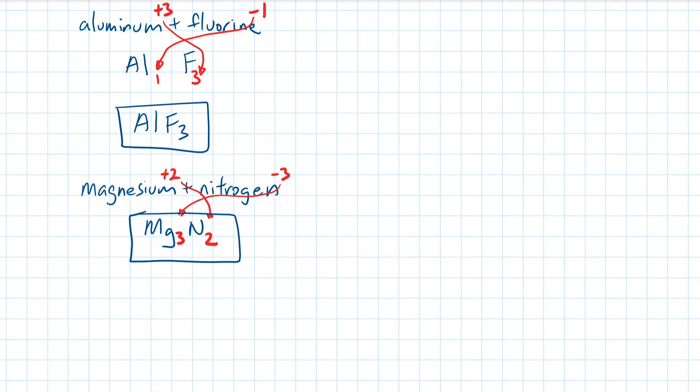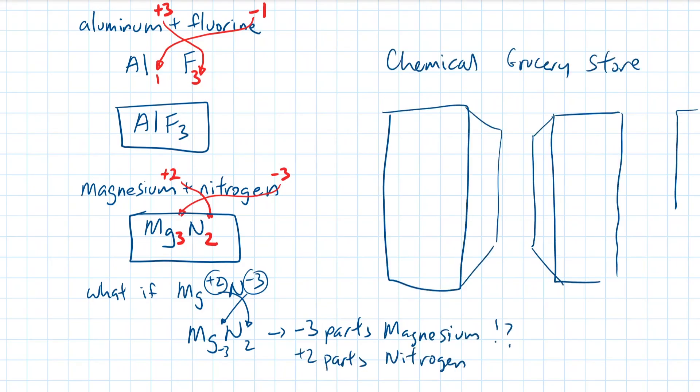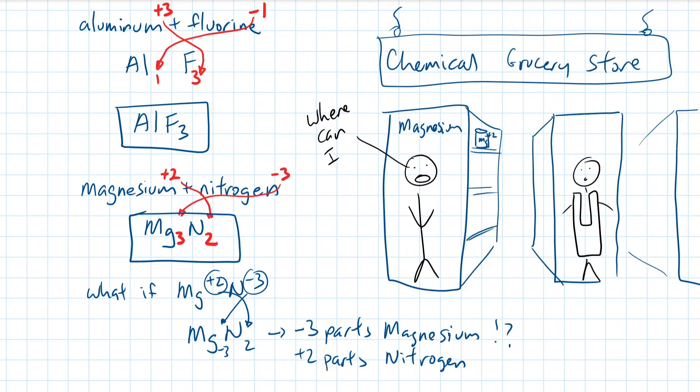Remember, don't write down any minus signs and all the numbers should be written in subscript to indicate quantity. If we want to bake a magnesium nitride cake, we need 3 parts magnesium and 2 parts nitrogen. If we accidentally transfer down the minus sign, that would mean that we would need negative 3 magnesiums and positive 2 nitrogens. Where in the grocery store can you find negative 3 magnesiums?